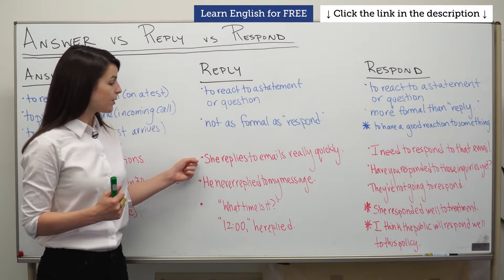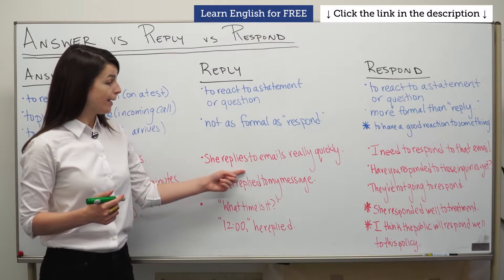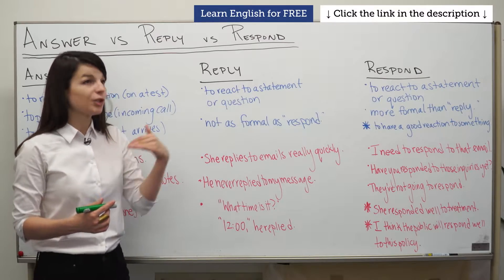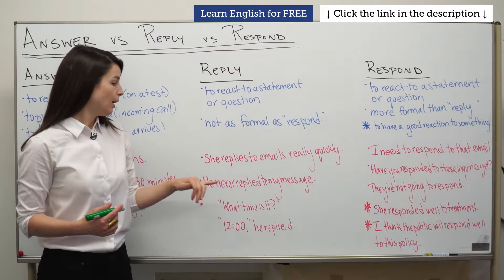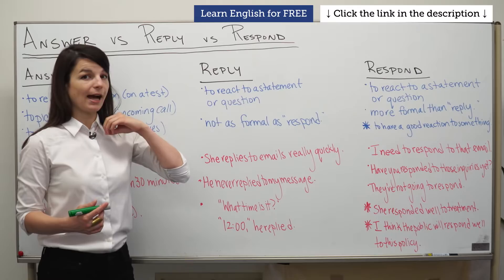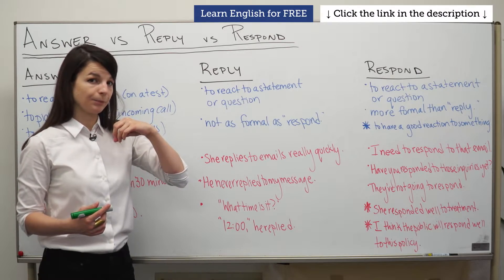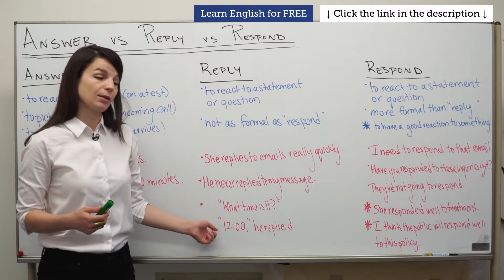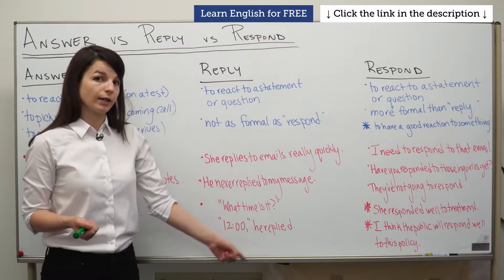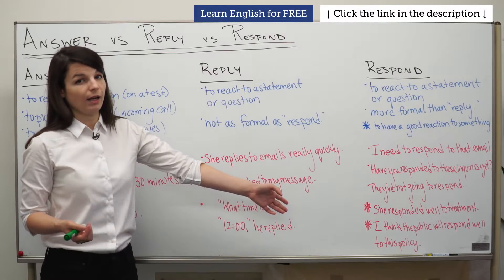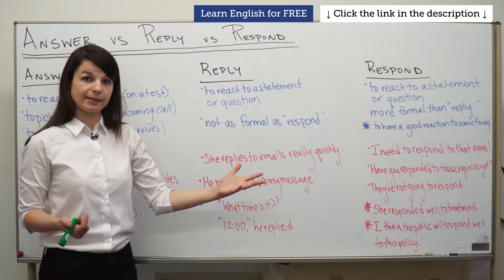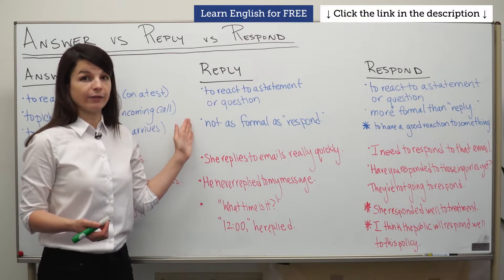Some examples of using 'reply': 'She replies to emails really quickly' — meaning she reacts and returns a message quickly. 'He never replied to my message' — past tense, I sent a message and received no reaction. We also use 'reply' in writing, like in novels, to describe someone's reaction. For example: 'What time is it?' '12 o'clock,' he replied. Reply is a neutral-level reaction word, and I use it as both a noun and verb in email writing.